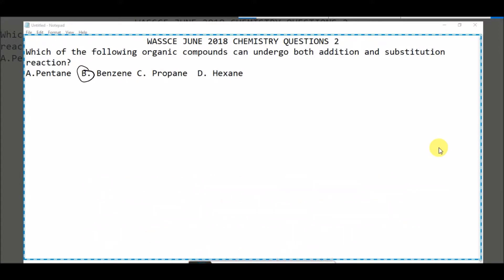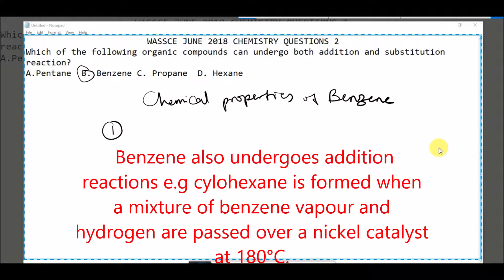Why is benzene the answer? Because the chemical property of benzene is that it undergoes substitution reaction as well as addition reaction. When you check the textbook for the chemical properties of benzene, you will be able to see that it has two properties: number one...